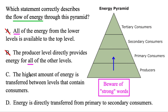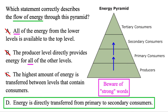Option C: the highest amount of energy is transferred between levels that contain consumers. That's not true, because the highest energy transfer goes from producers to consumers, not from consumers to consumers — so C is out. Finally, D: energy is directly transferred from primary to secondary consumers, and that would be from here to here. That is true, and that's our correct answer.